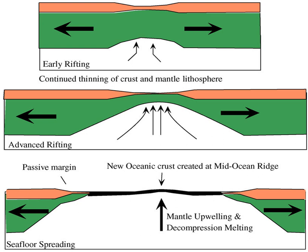Active versus passive margins refers to whether a crustal boundary between oceanic lithosphere and continental lithosphere is a plate boundary or not. Active margins are found on the edge of a continent where subduction occurs, often marked by uplift and volcanic mountain belts on the continental plate. Less often there is a strike-slip fault, as defines the southern coastline of West Africa. Most of the eastern Indian Ocean and nearly all of the Pacific Ocean margin are examples of active margins. A weld between oceanic and continental lithosphere is called a passive margin.